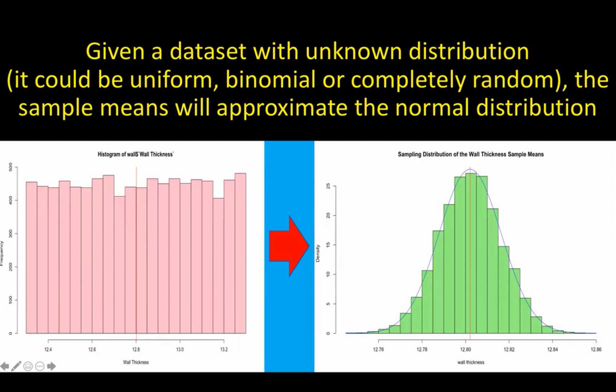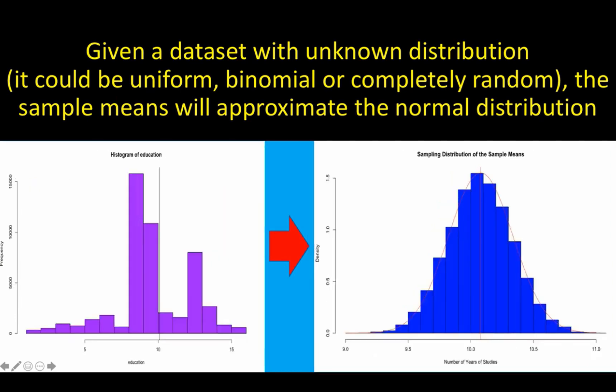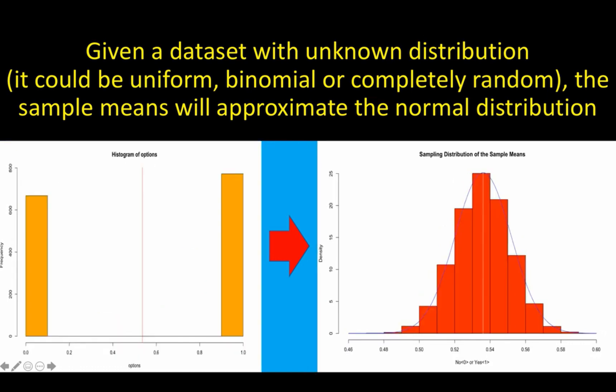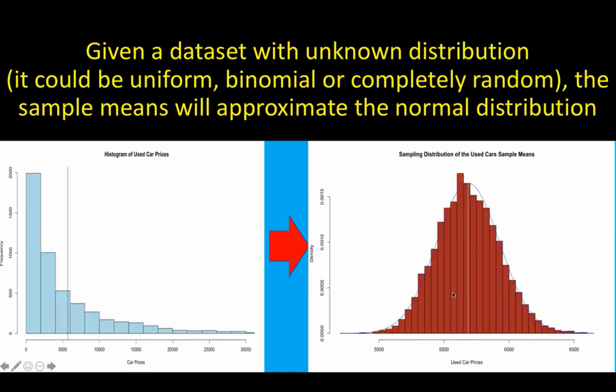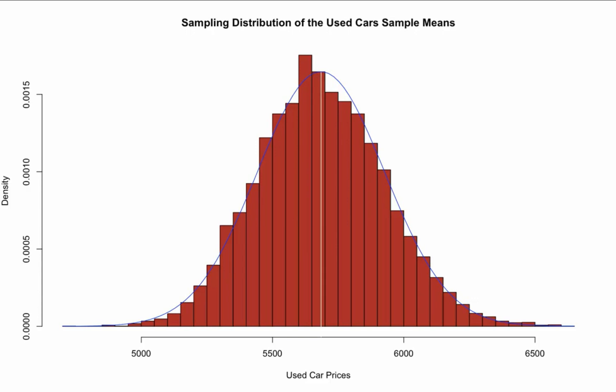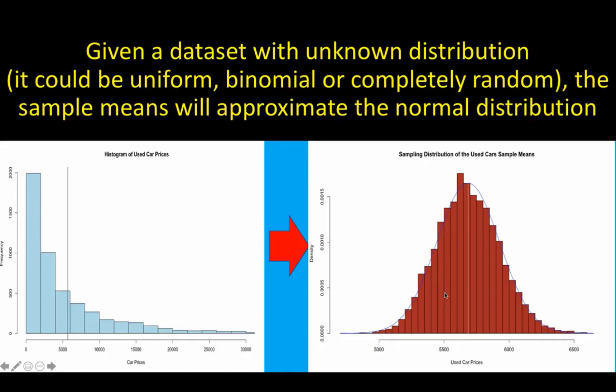And that is the heart and soul of the Central Limit Theorem. Because no matter what the distribution is, when we take samples randomly and compute the means of those samples, and look at the distribution of those sample means, the surprising result is that the distribution of those sample means would follow a normal distribution. That is a very, very important discovery in statistics.